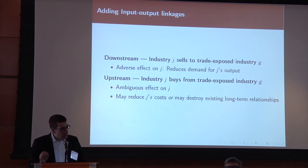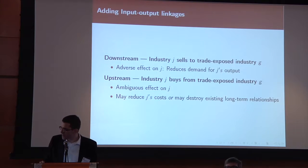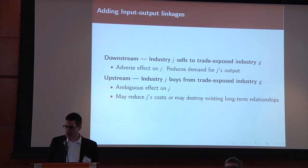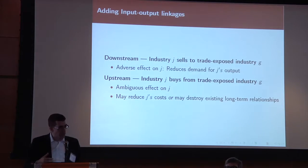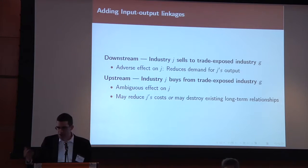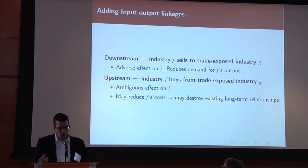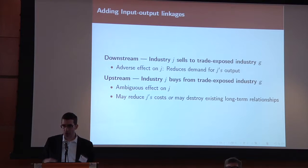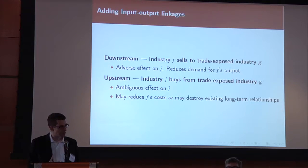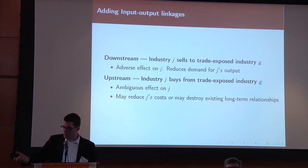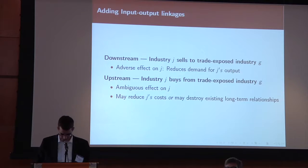The prediction is less clear when we look at the so-called upstream effect — that is, industry J is buying its inputs from a trade-exposed industry G. For instance, a car manufacturer buying certain car parts now being imported from China. One possibility is that the availability of cheaper car parts from China is actually good for the car manufacturer and allows expansion. On the other hand, disruption of the supply chain might also hurt that manufacturer.